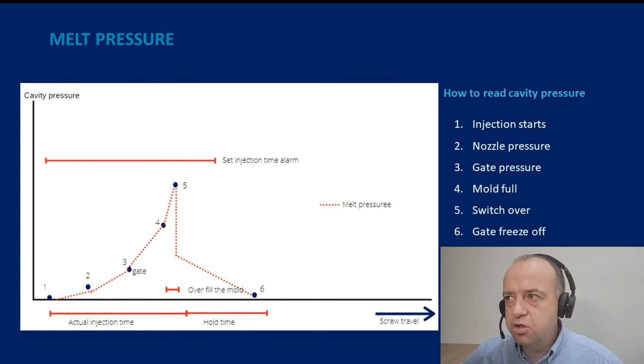Okay, so just to point out some of the areas here of the curve. Number one, we're going to start injection at zero injection time. As the plastic flows in through the mold, you may see a deflection or a change in the curve, and this is where the plastic is just dropping pressure through the nozzle of the machine.